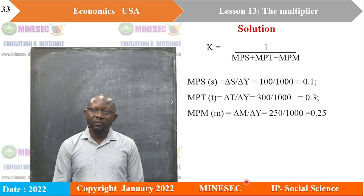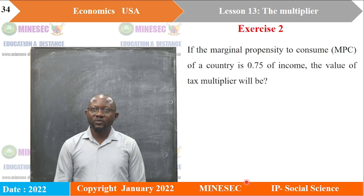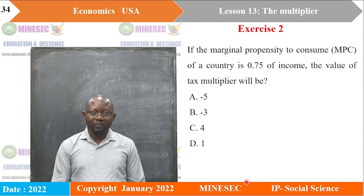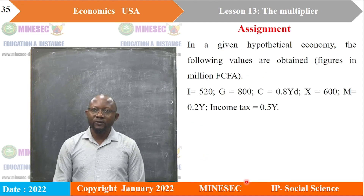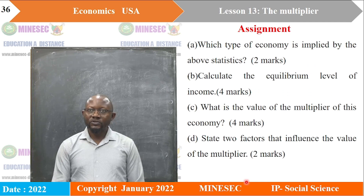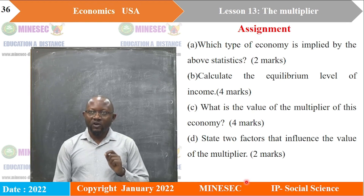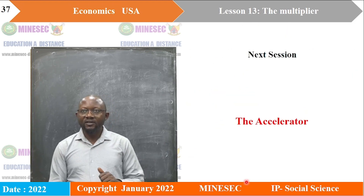Exercise one: given values where MPS will be 0.3 and MPM will be 0.2, use the formulas given earlier — our multiplier in this case is 1.538. Exercise two: if the marginal propensity to consume is 0.75, the value of the tax multiplier will be minus 3. For the assignment: in a given type of economy, the following values are obtained (figures in million francs). Questions: which type of economy is implied by the statistics (2 marks)? Calculate the equilibrium level of income (4 marks). What is the value of the multiplier (4 marks)? State two factors that influence the value of the multiplier (2 marks).